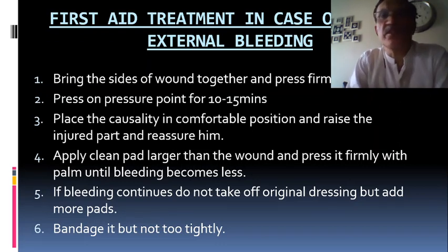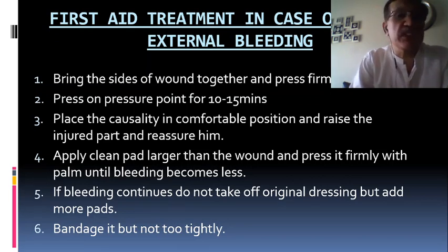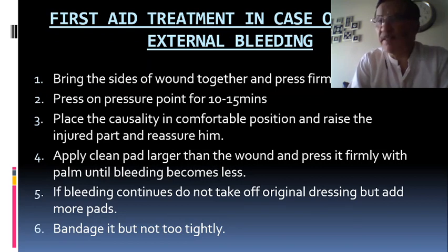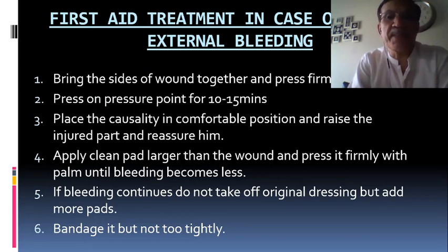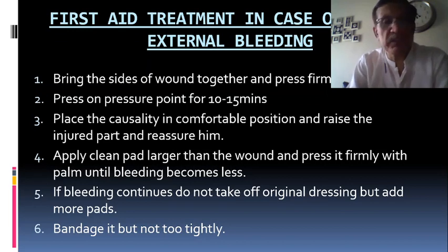First aid for severe external hemorrhage: Bring the sides of the wound together and press firmly. Press on the pressure point for 10 to 15 minutes. Place the casualty in a comfortable position, raise the injured part, and reassure them — due to gravity, blood flow to the part will decrease and bleeding will also decrease. Apply a clean pad larger than the wound and press firmly with the palm until bleeding lessens. If bleeding continues, do not remove the dressing but add more pads. Bandage firmly but not too tightly.